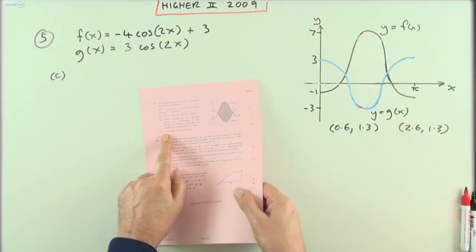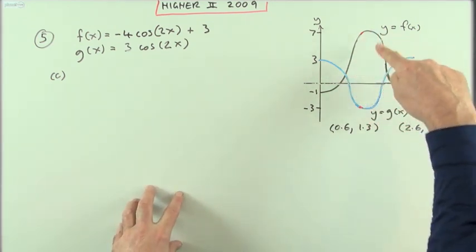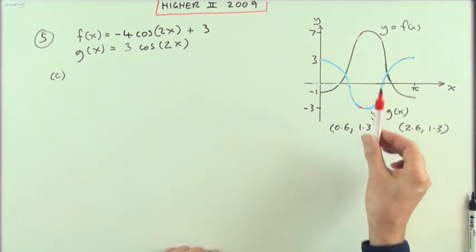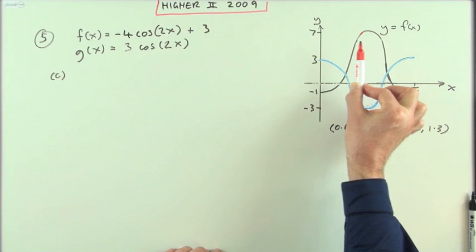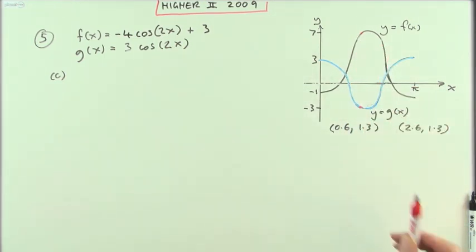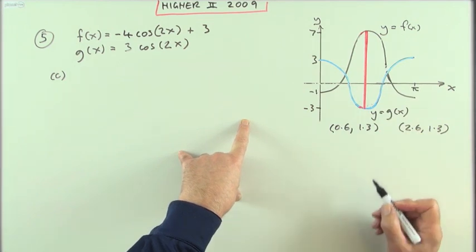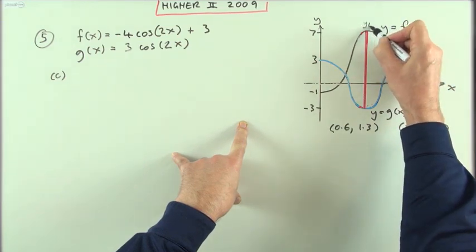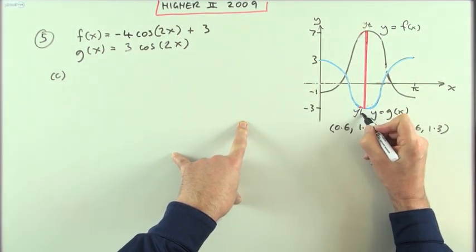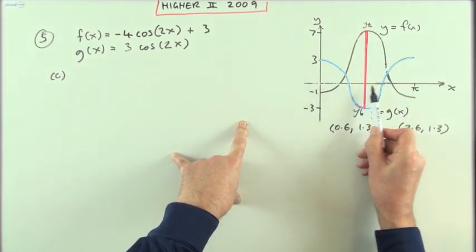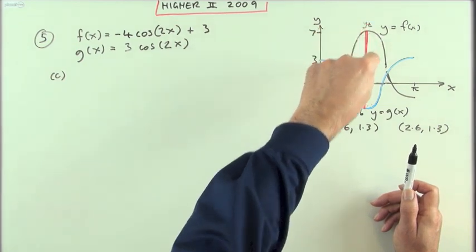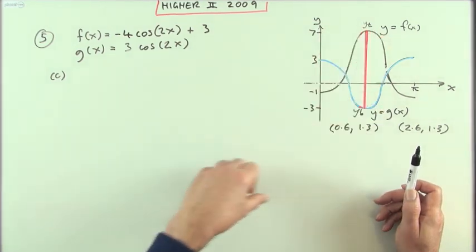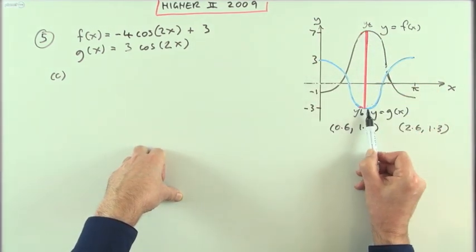Part (c): calculate the shaded area — the area enclosed between the two graphs. When you calculate an area you're adding up lots of thin strips, working out the areas of these little rectangles. The length of each rectangle must be the y-coordinate of the top, given by one equation, take away the y-coordinate of the bottom, given by the other equation. It doesn't matter where the x-axis is — positive something take away negative something increases it to the sum of those two lengths. That length times its width dx.